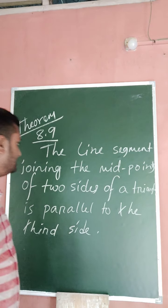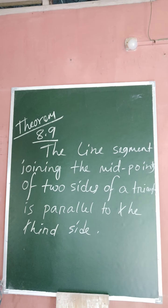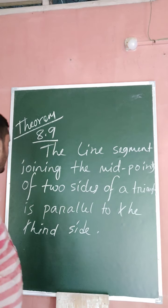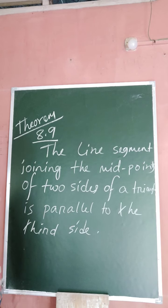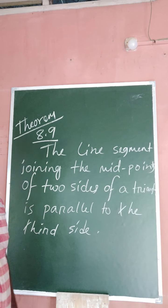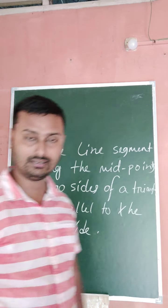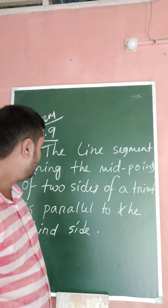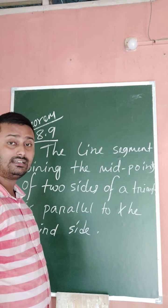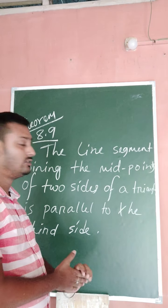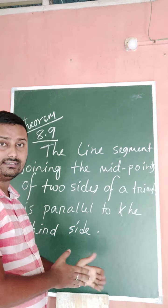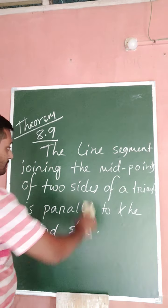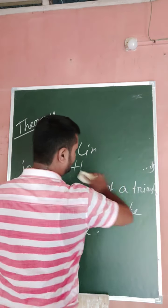Theorem 8.9 states that the line segment joining the midpoints of two sides of a triangle is parallel to the third side. So we have to prove that in any triangle, if a line segment joins the two midpoints of two sides, that segment will be parallel to the third side.